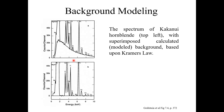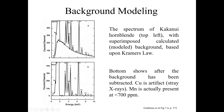Here again you can see two spectra. At the top is the spectrum of sphalerite with the superimposed calculated background based upon Kramers' law. At the bottom is the spectrum after the background has been subtracted. Copper is an artifact, and manganese is actually present at less than 700 ppm. After background modeling you can clearly see the exact difference between the two spectra.